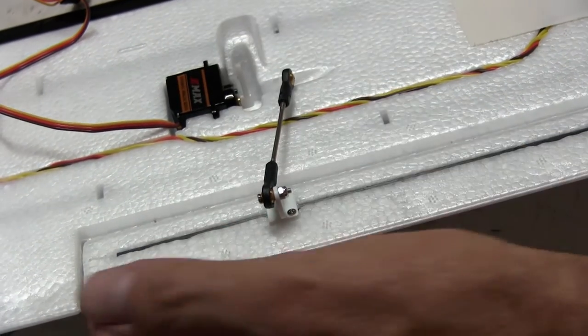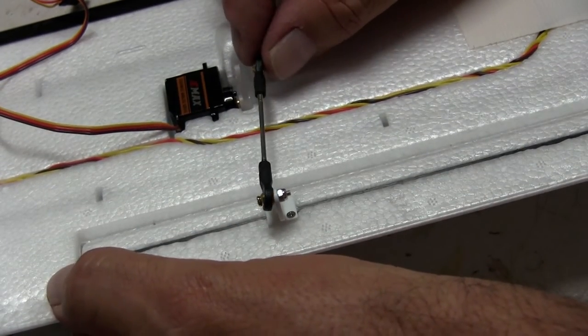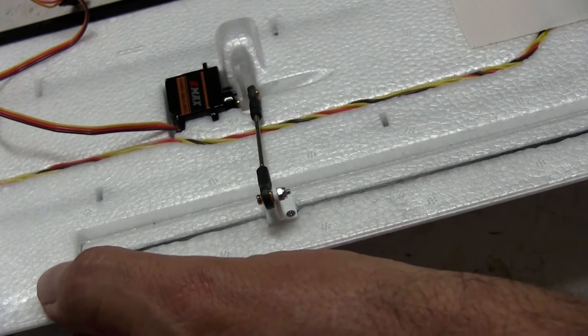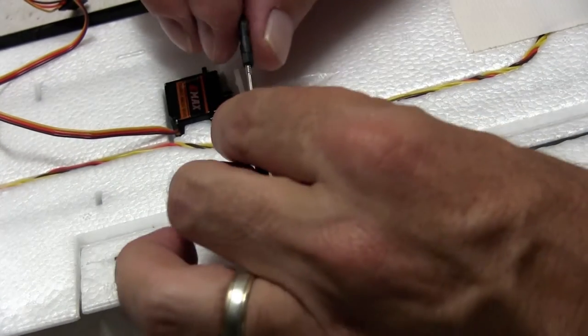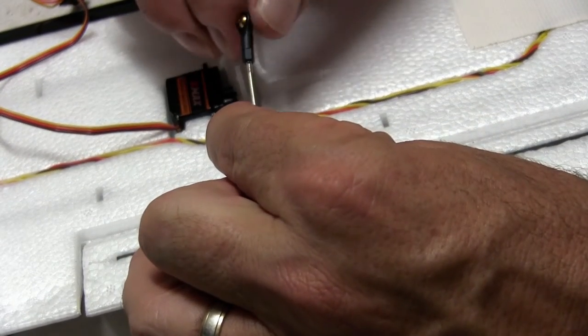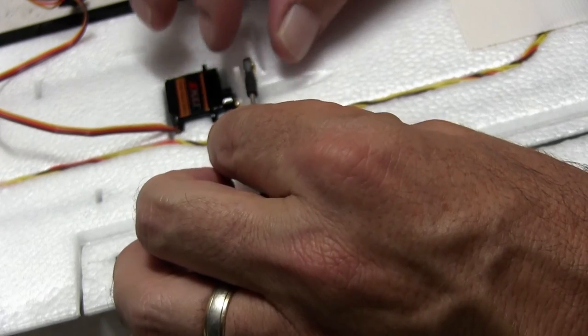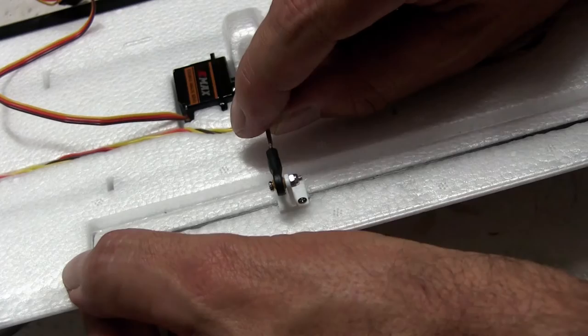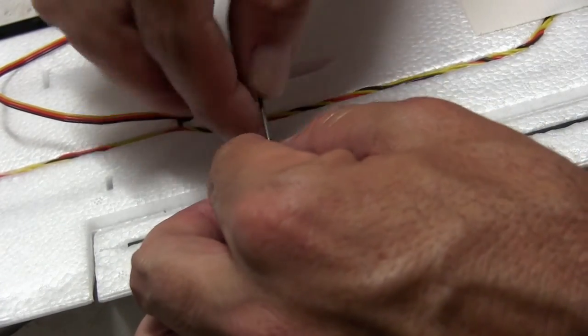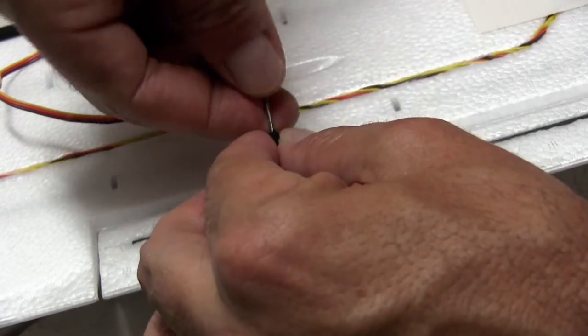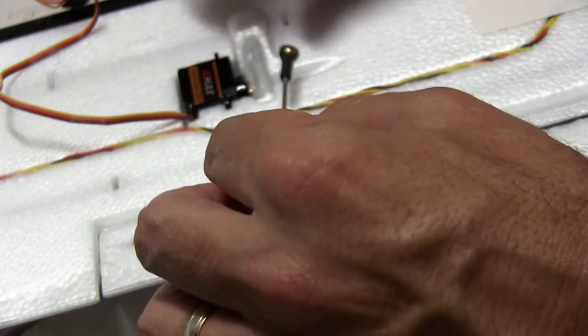So if I get my ailerons even we'll just give these a little twist out. So it gets it roughly in place. And then we'll fine tune that later on and give it a little bit more. One more turn out I think will be fine.